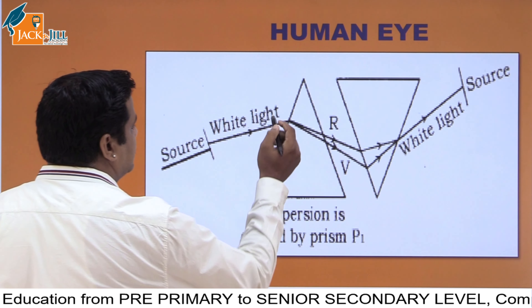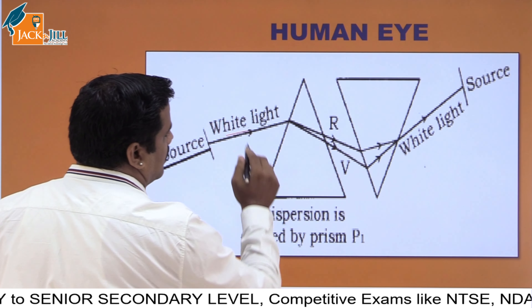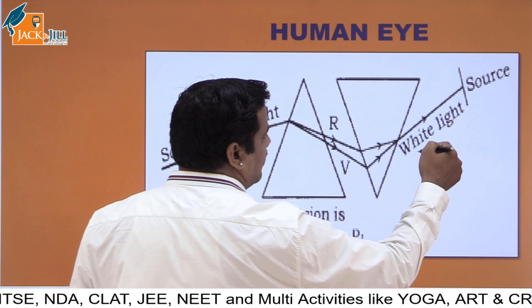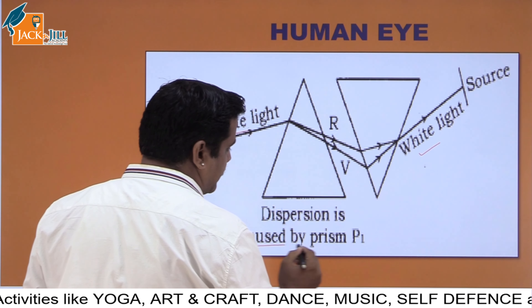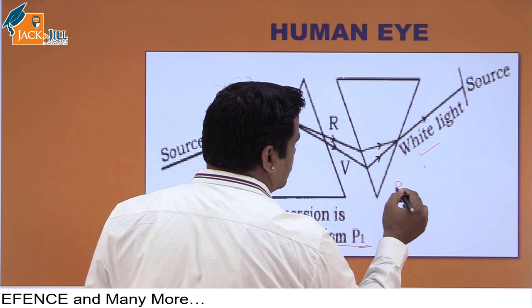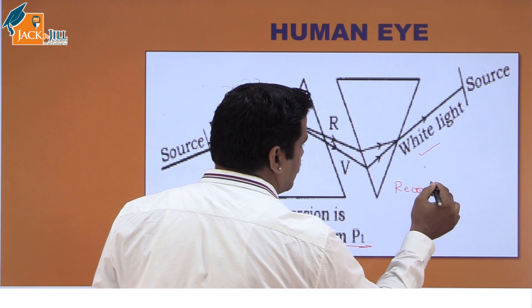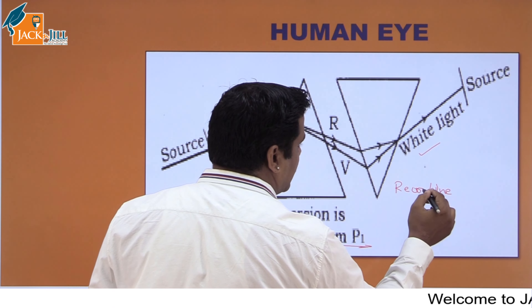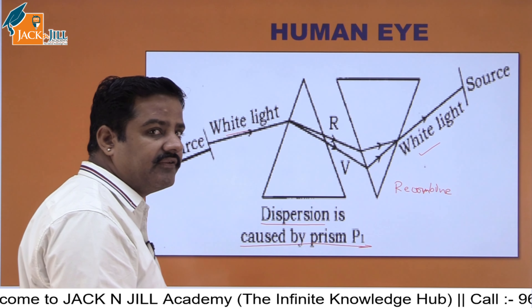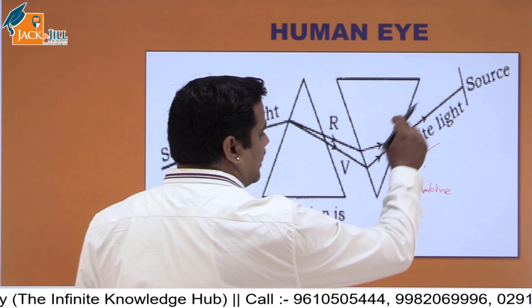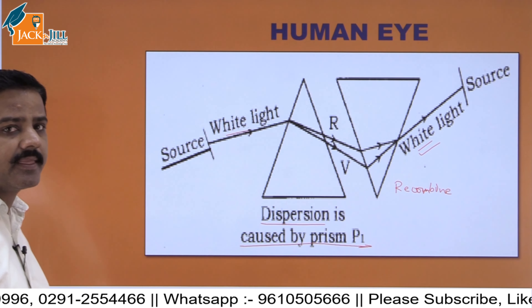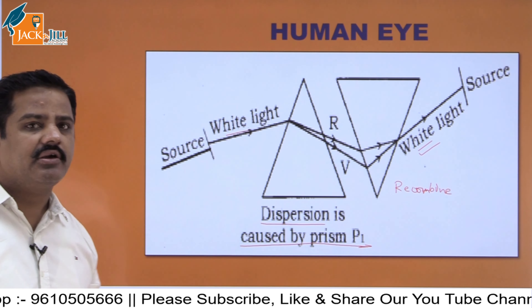So: the source is white light, prism one disperses it from red to violet, and an inverted prism recombines it back to white light. The first prism causes dispersion — splitting white light into different colours — and the second prism causes recombination — converting those different colours back into white light.